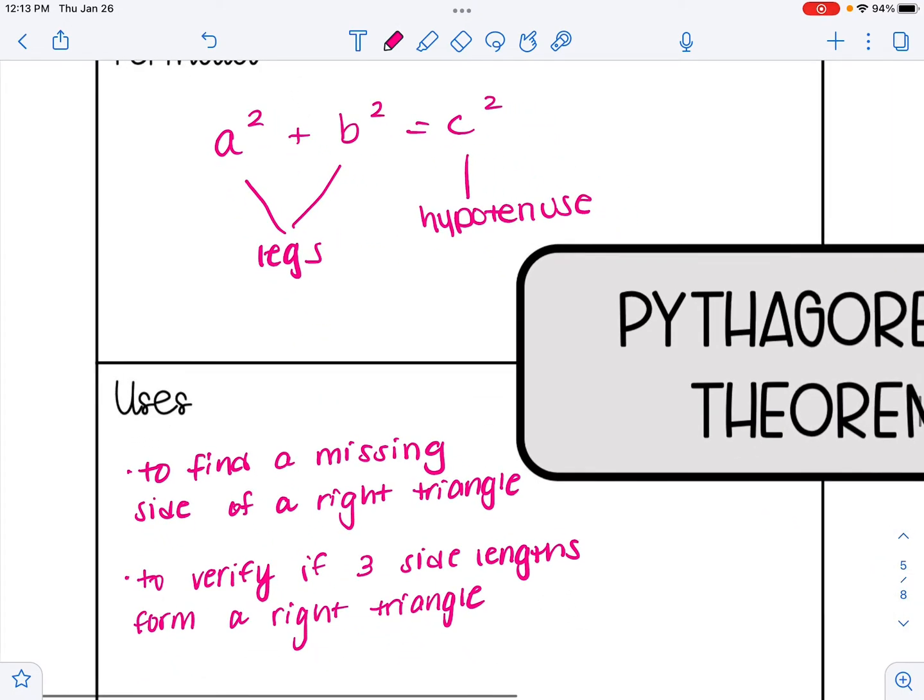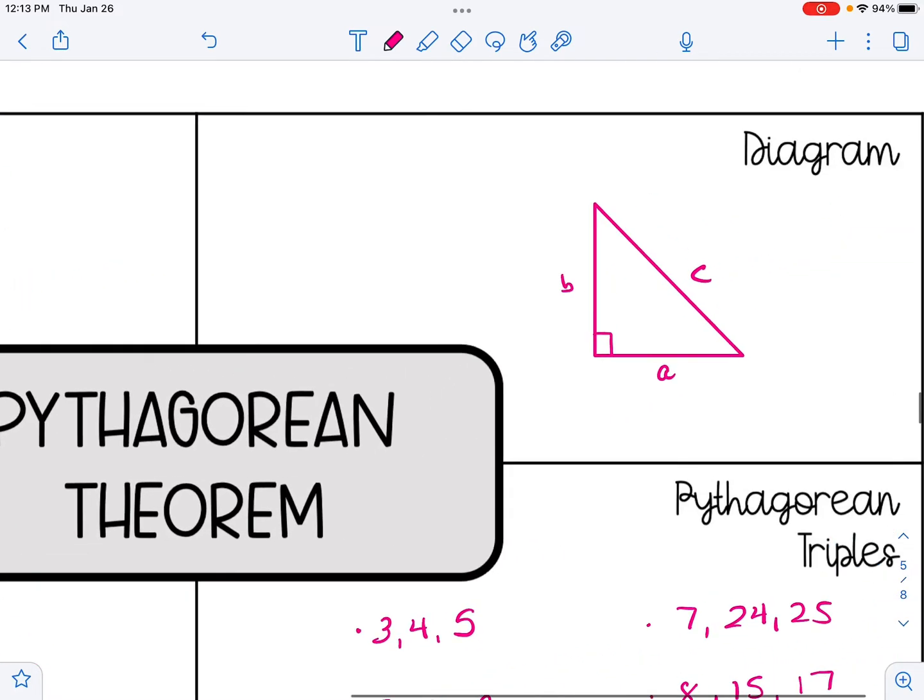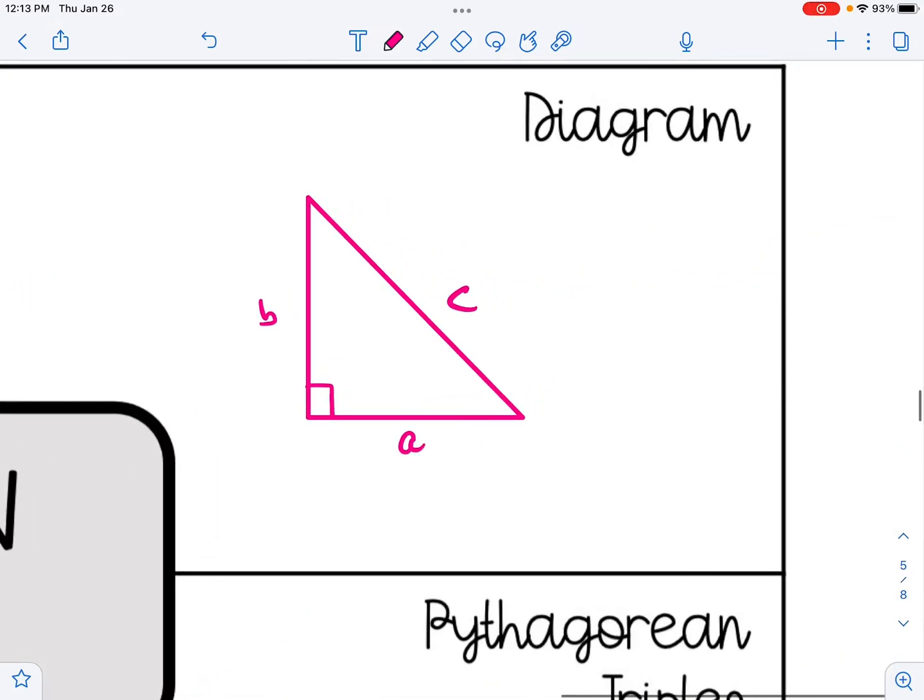Pythagorean Theorem is basically used for two reasons. One, to find a missing side of a right triangle, or it could be used to verify if three side lengths form a right triangle. In order for it to be a right triangle, the Pythagorean Theorem must work or be satisfied. If we take a look at a diagram, A and B represent the legs. Those are the two sides that form the right angle, whereas C is the hypotenuse, the side that is across from the right angle.